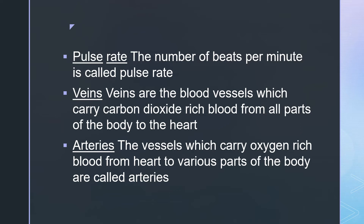Veins — veins are the blood vessels which carry carbon dioxide-rich blood from all parts of the body to the heart. Arteries — the vessels which carry oxygen-rich blood from the heart to various parts of the body are called arteries.